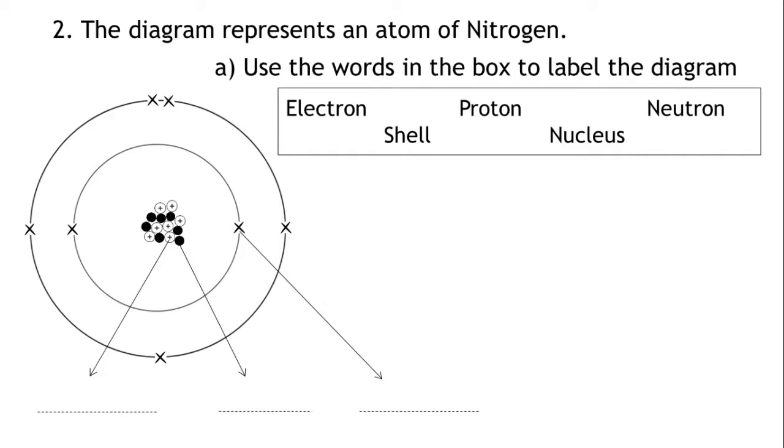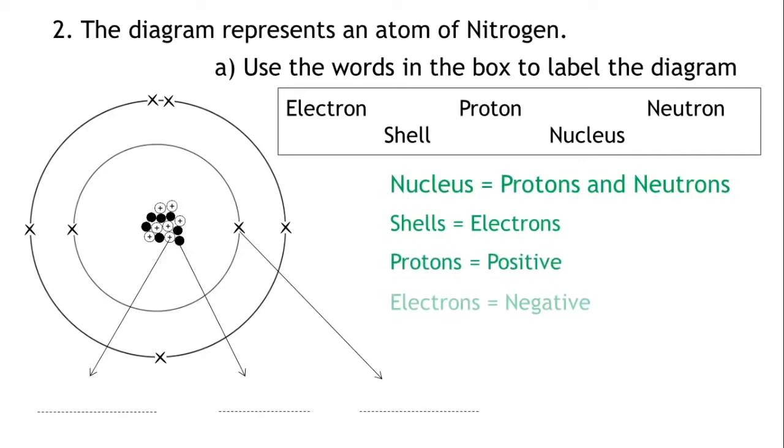So let's write down what we know about an atom. An atom has a nucleus which is made up of protons and neutrons. This is surrounded by shells and in these shells we find electrons. Protons are positive, electrons are negative and neutrons are neutral.